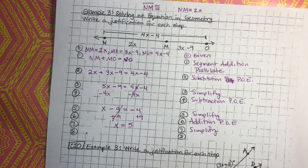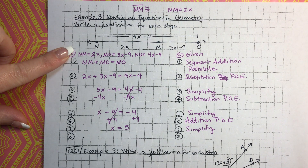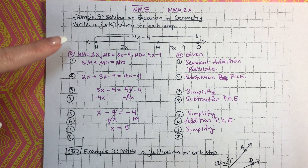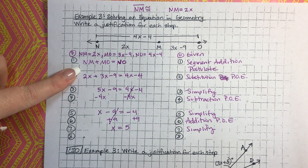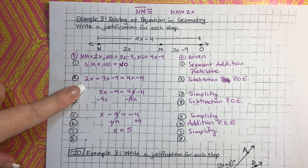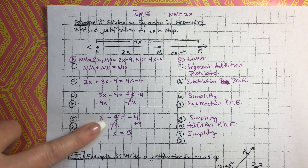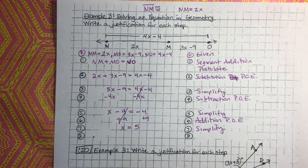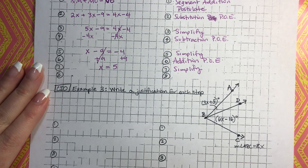So that is a proof — a geometric proof. We wrote all the given information, recognized from our previous experience that this is a segment addition postulate, wrote it using variables and symbols, then substituted in the given values and used our algebra skills. And there you have the answer. We're going to go ahead and do the next problem.